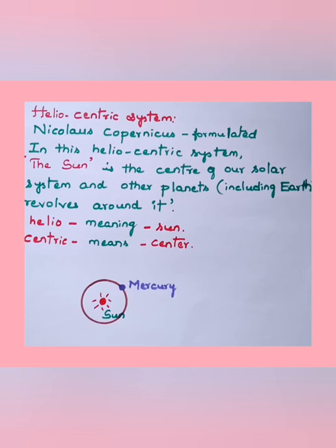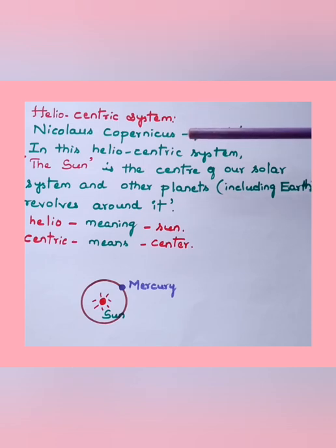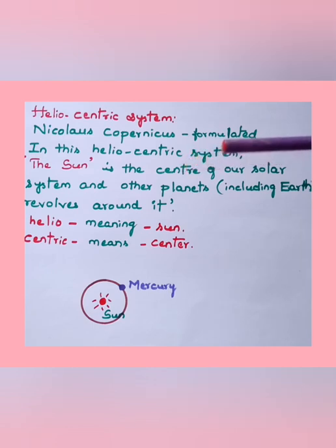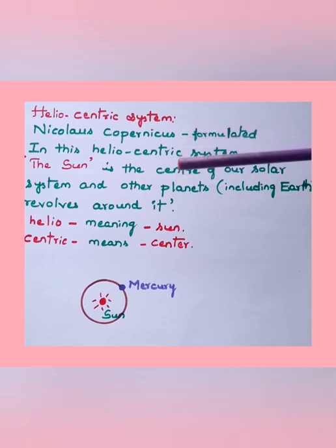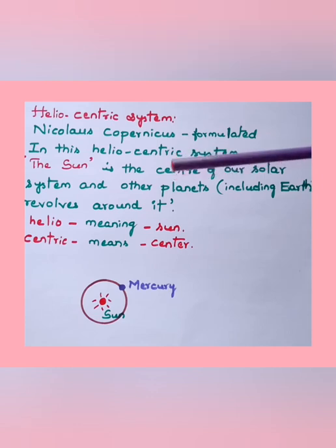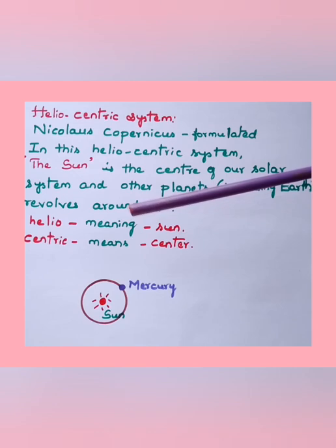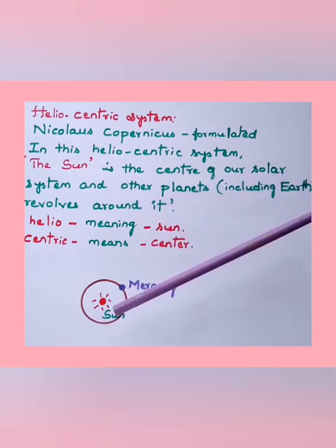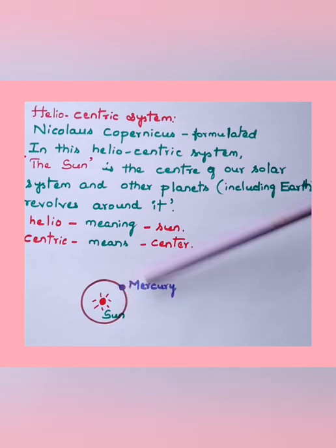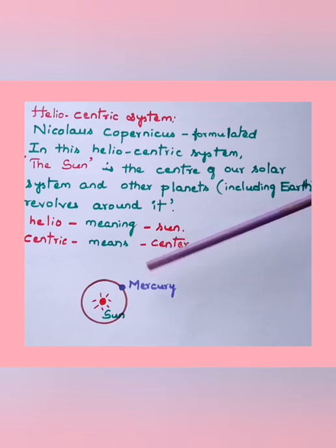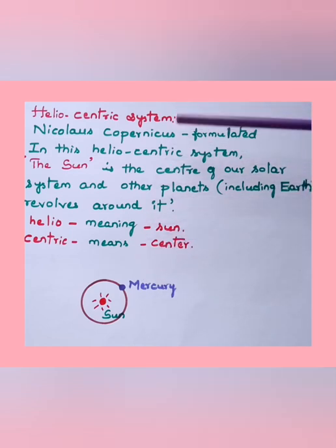Later, Nicholas Copernicus formulated the heliocentric system. According to this, the sun is the center of our solar system and other planets including the earth revolve around it. This is the system we follow right now, which is proved and accepted universally. 'Heliocentric' means sun-centric — sun is at the center — and Mercury, Venus, Mars and all the planets including earth revolve around the sun.